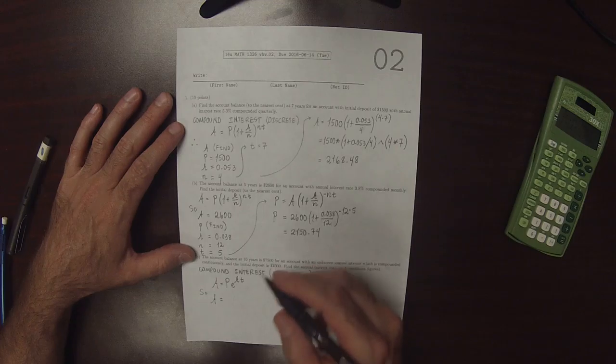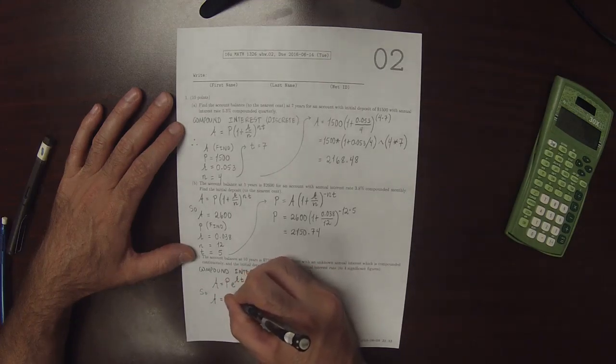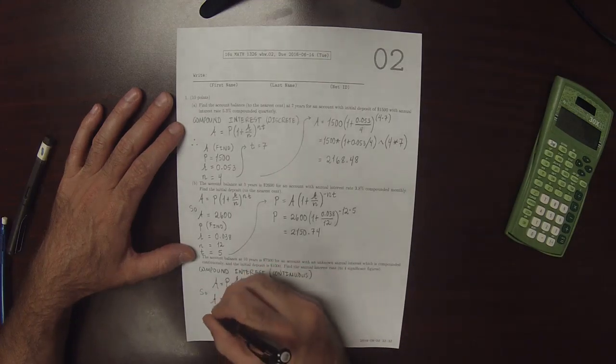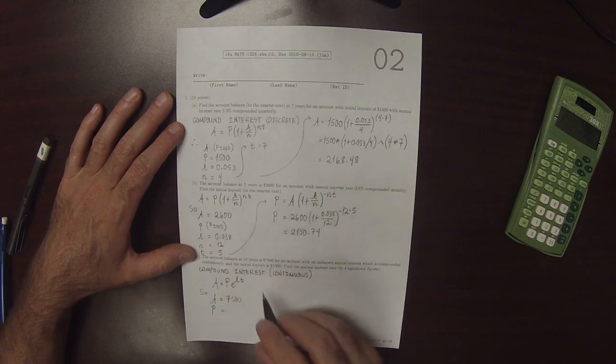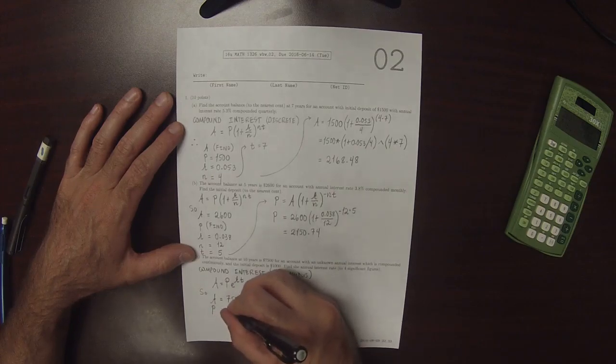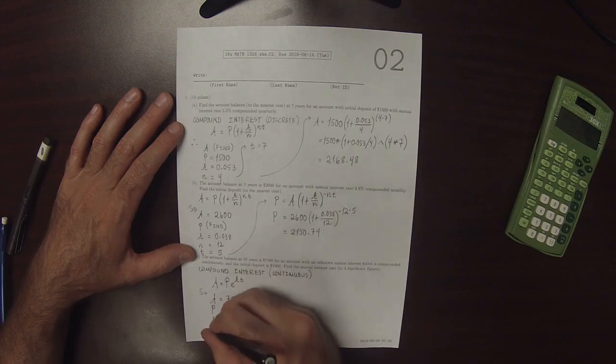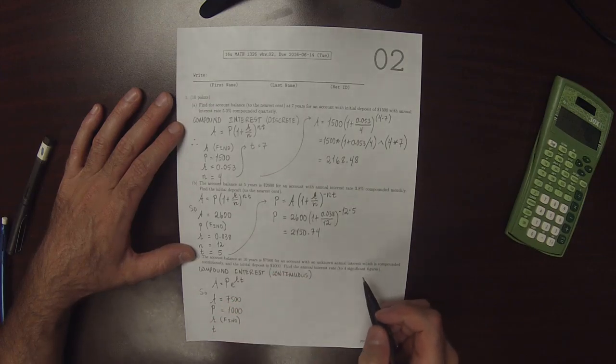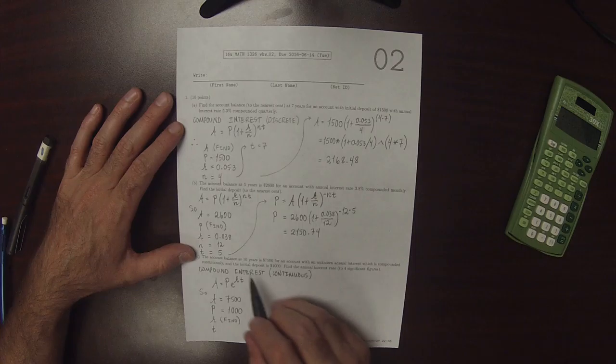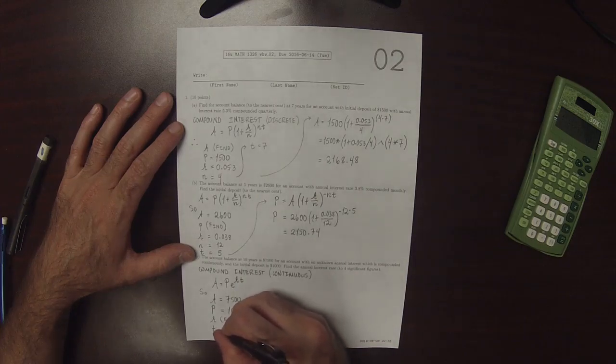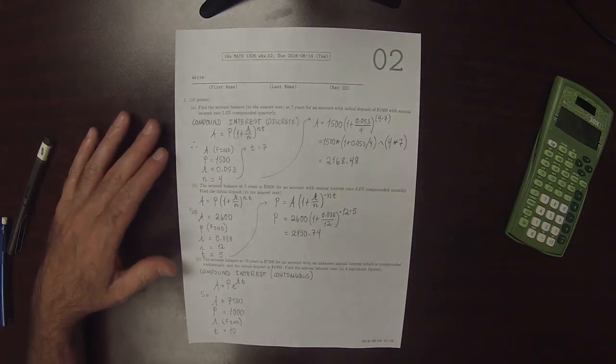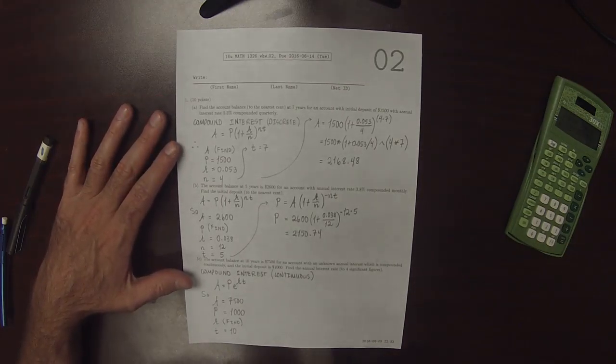So A is $7,500. P is $1,000. R, this is what we are to find. And T, 10 years.